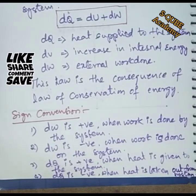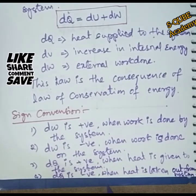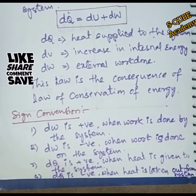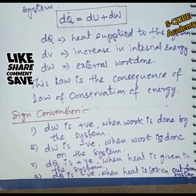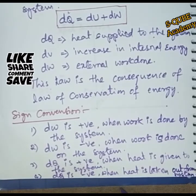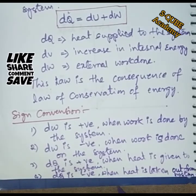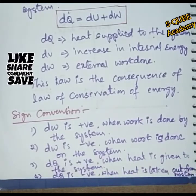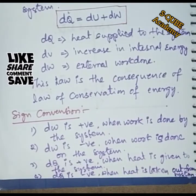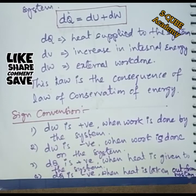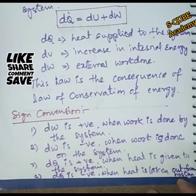DQ is negative when heat is taken out from the system. So, to state and explain the First Law of Thermodynamics: you can see these sign conventions are important in the system.